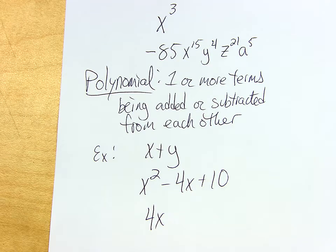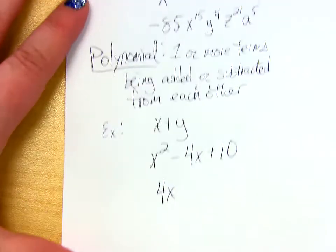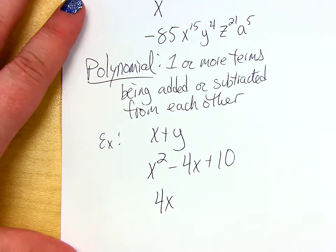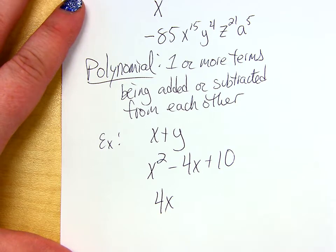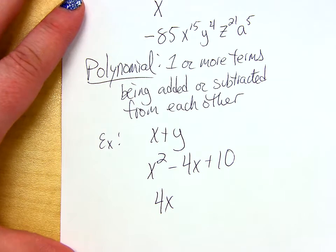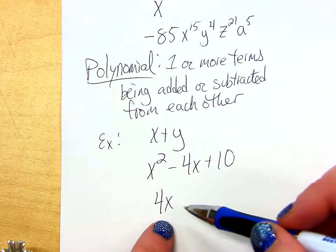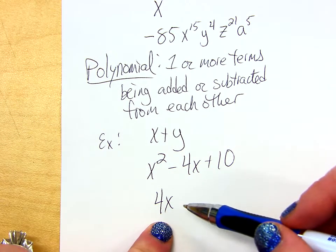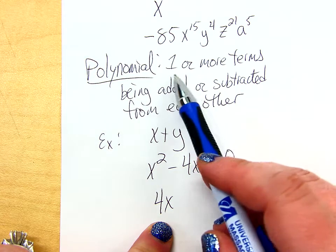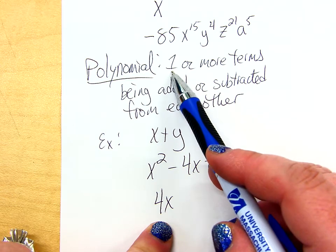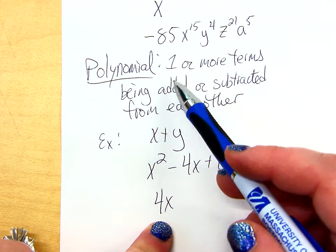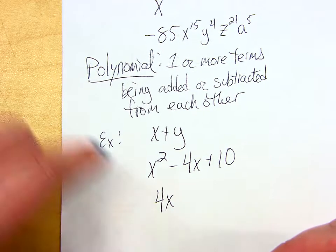All right. So, these are polynomials, and then we classify polynomials in two different ways. One, by how many terms there are, and then another way is by degree. So, let me explain what a degree is. Has everybody written this down so far? No. Oh, sorry. I don't mean to be going too fast. I just get excited when I'm talking about polynomials.